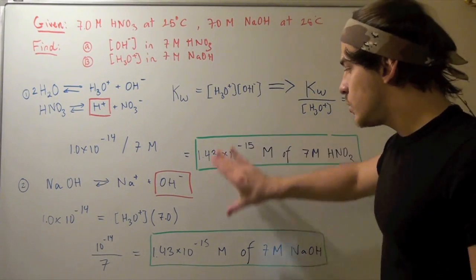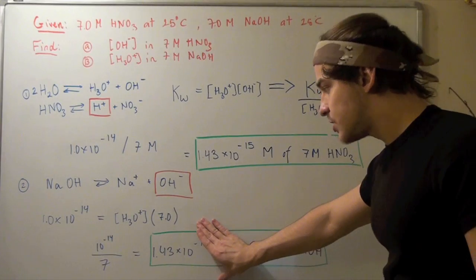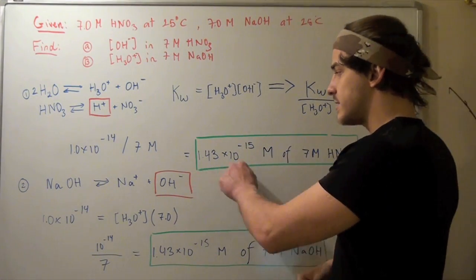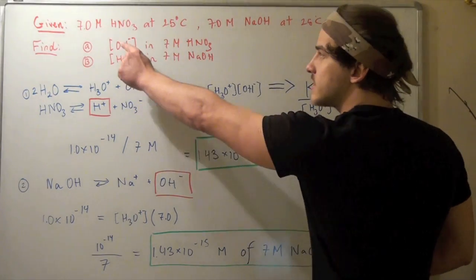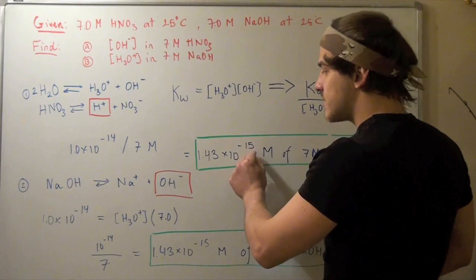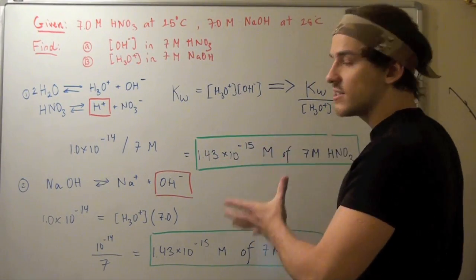These two numbers have the same magnitude but they mean two different things. In this case, this means the concentration of hydroxide. That's a very small concentration of base. So this is an acidic solution.